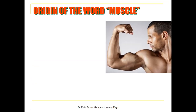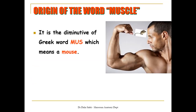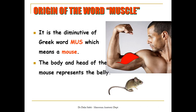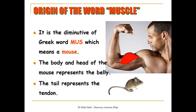So what is the origin of the word muscle? The word muscle is the diminutive of the Greek word 'mus', which means mouse. If you look at a mouse, it has a head, a body, and a tail. The body and head of the mouse represents the belly of the muscle, and the tail of the mouse looks like its tendon. That's why they call these structures muscles.